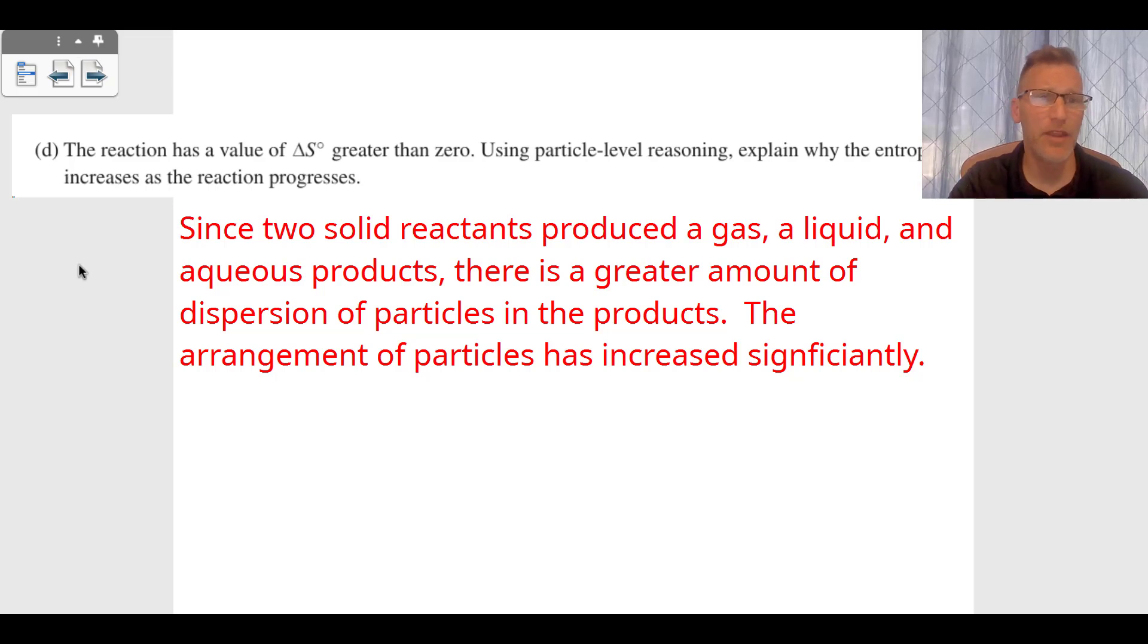Part D goes to thermodynamics with entropy (ΔS). The reaction has a value greater than zero, meaning entropy is positive. They want to know using particle-level reasoning why entropy increases as the reaction progresses. Since there are two solid reactants producing a gas, liquid, and aqueous products, there's a greater amount of dispersion of particles in the products. The arrangement of particles has increased significantly from solid to gas, liquid, and aqueous products, so ΔS is positive.